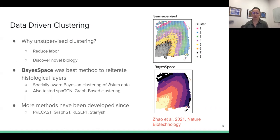So why might we want to use unsupervised data-driven clustering? A, it reduces labor. The annotation of these layers is quite tedious and relies on a lot of work from people who have expert knowledge of the tissue. And then B, it also limits us to what we already know about the tissue. Using unsupervised clustering allows us to explore the gene expression and discover novel biology and different patterns of gene expression within that tissue.